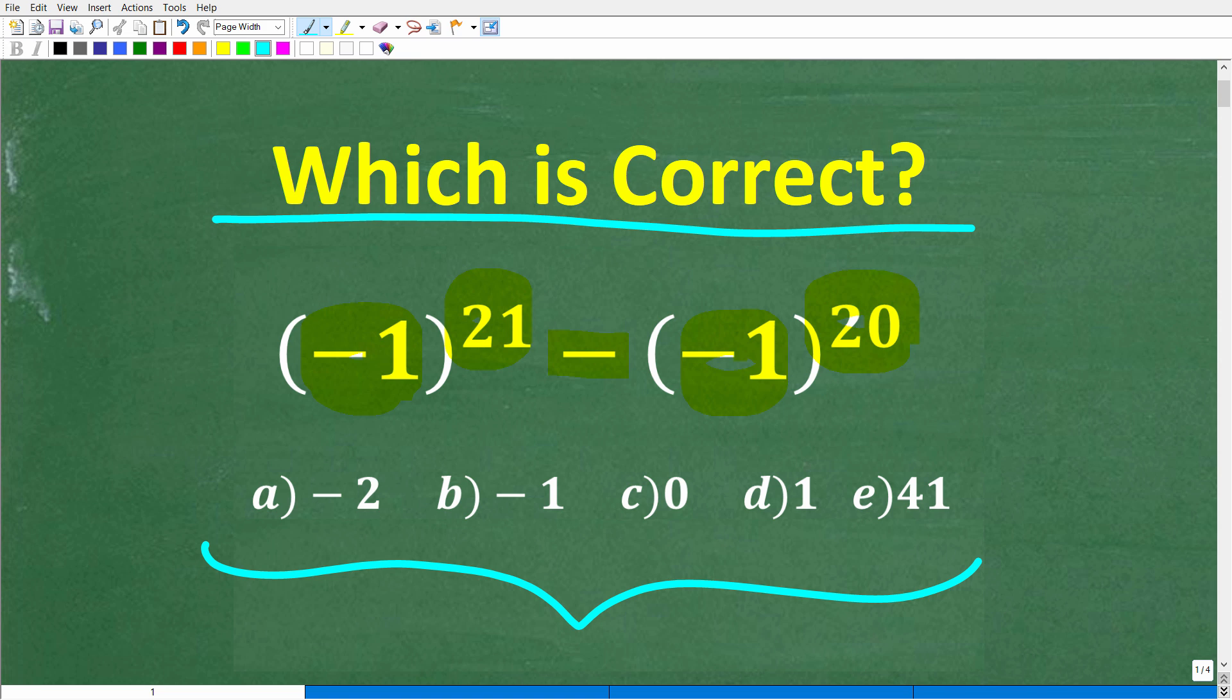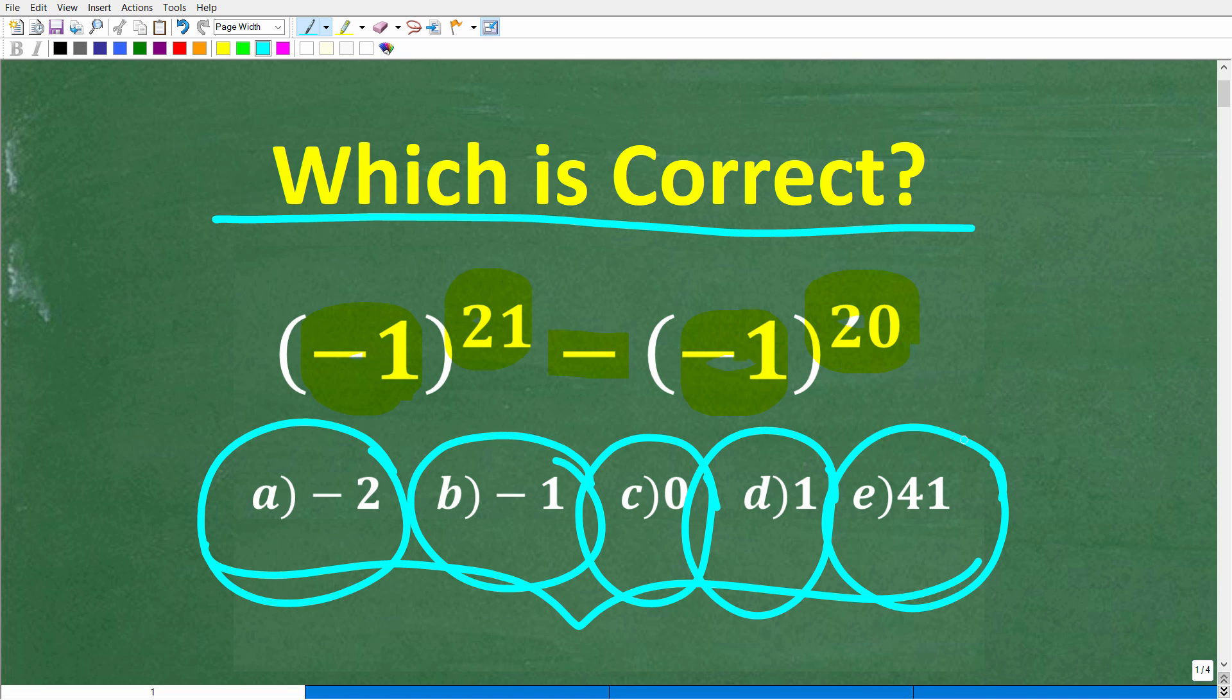Now this is not that difficult. Let's take a look at our answer choices. So A is negative two, B is negative one, C is zero, D is one, and E is 41. Now, even if you don't know the answer, because this is a multiple choice exam, as long as you're not being penalized, you should at least take a guess.